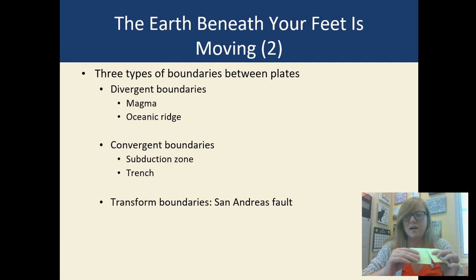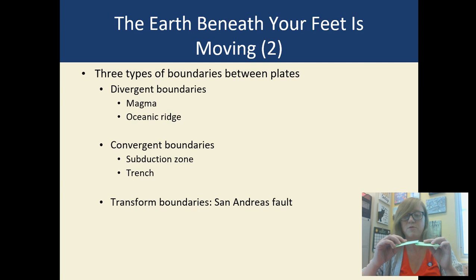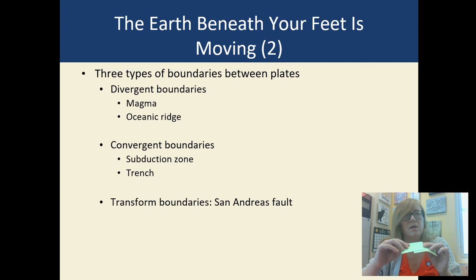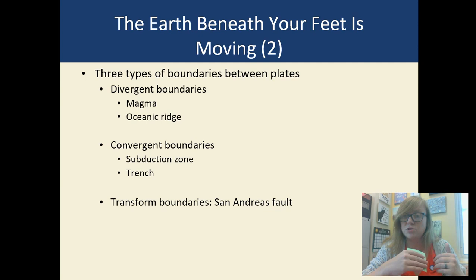Then you have the opposite: convergent boundaries. If you converge on an idea it means you come together, so if two plates push together, they push up against each other. If these are two continental crusts, they will form a mountain. When oceanic crust hits continental crust, the oceanic crust goes underneath the continental crust — that's called a subduction zone. There you'll find earthquakes and volcanoes because there's a lot of scraping and heat generated. You can also find a trench in the ocean at these zones.